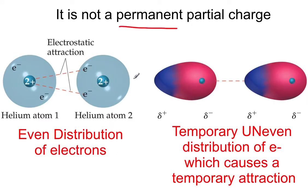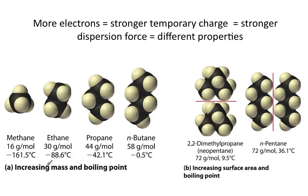So it's not a permanent partial charge, that's really important. Over here, we see an even distribution of electrons. But if the electrons just happen to move to one side or the other, there's more electrons than on the other side. So it gets a negative charge, which will be attracted to the other side, positive charge. So it's a temporary uneven distribution. That's London dispersion forces.